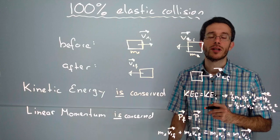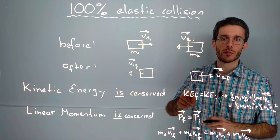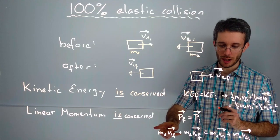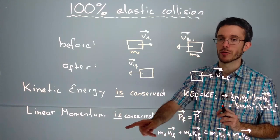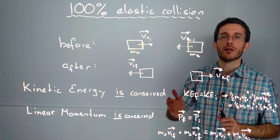So in a 100% elastic collision, we can have one equation from conservation of energy, and then we can have for each dimension in which we are traveling, one equation from conservation of linear momentum.